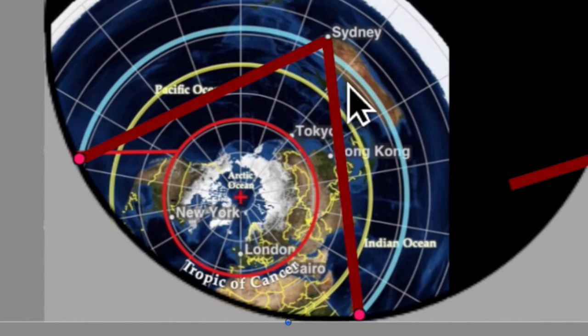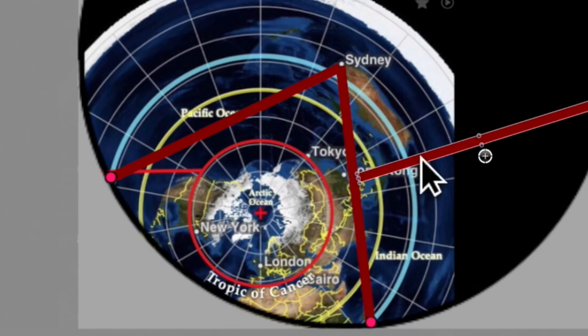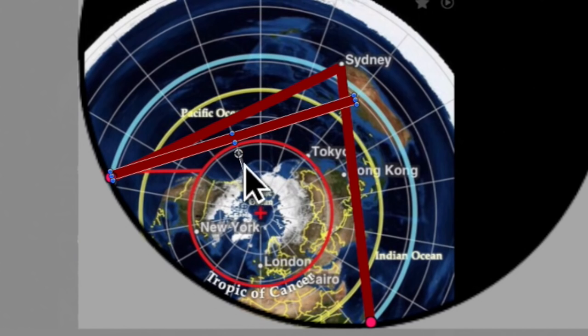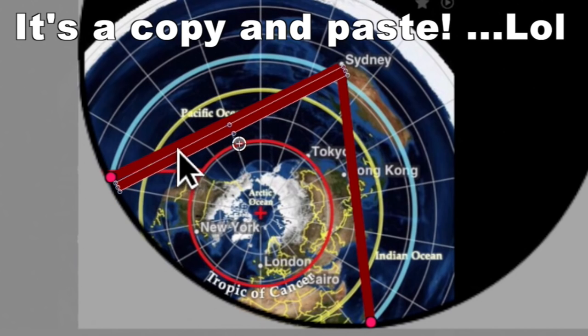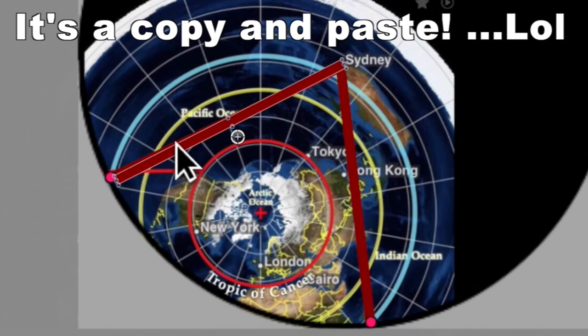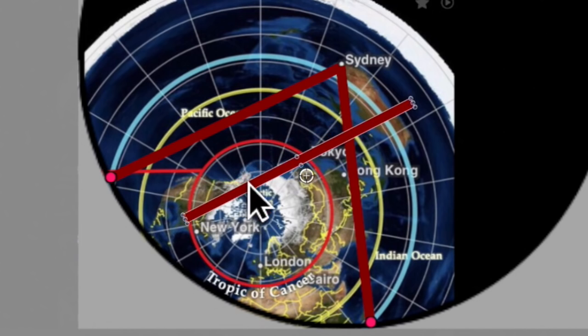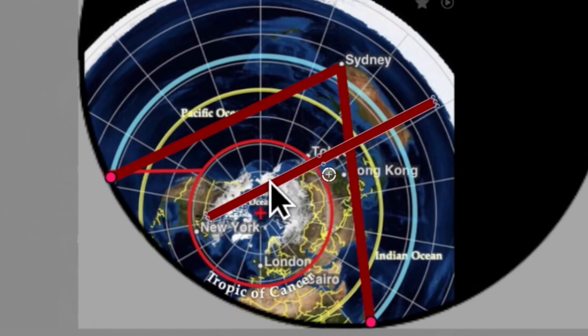What I'll do now is take a line that is the same length and I'll show that it's the same length. Yeah, pretty much, you know, the same length there as our lines. That's how far we can see across the flat Earth, and I'll place it on... this is New York right here.